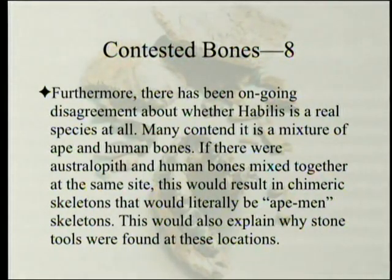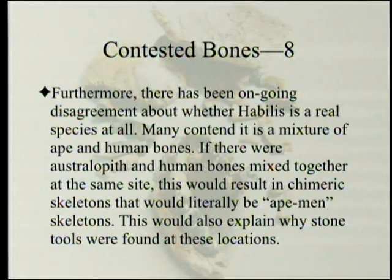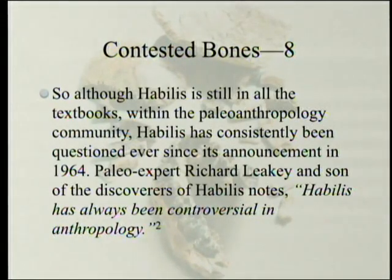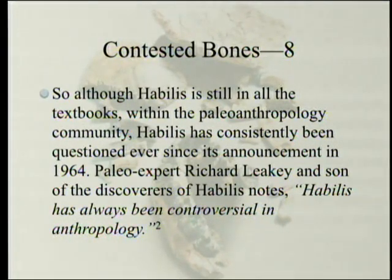Furthermore, there has been ongoing disagreement about whether habilis is a real species at all. Many contend it is a mixture of ape and human bones. If Australopith and human bones were mixed together at the same site, this would result in chimeric skeletons — literally ape-man skeletons. This would also explain why stone tools were found at these locations, because the human parts made them. Although habilis is still in all the textbooks, within the paleoanthropology community habilis has consistently been questioned ever since its announcement in 1964. Paleo expert Richard Leakey, son of the discoverers, notes habilis has always been controversial in anthropology.